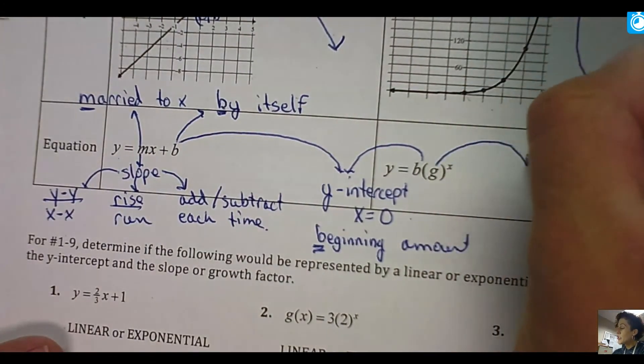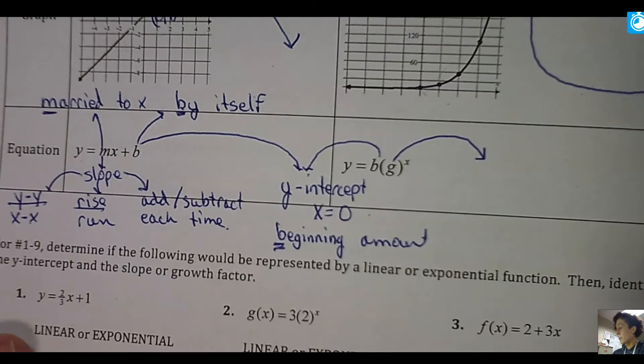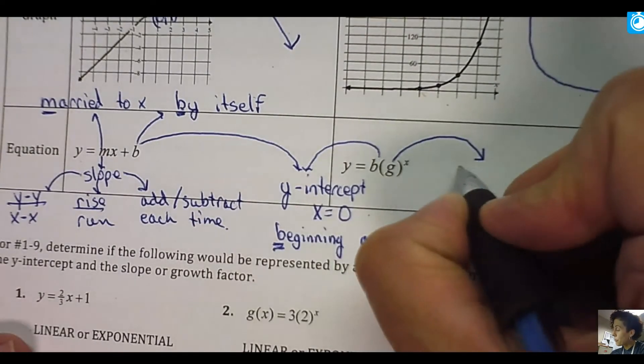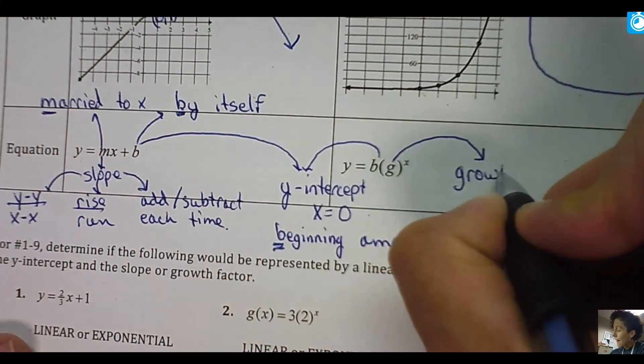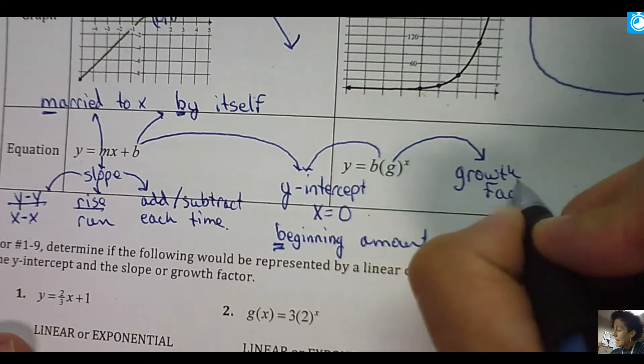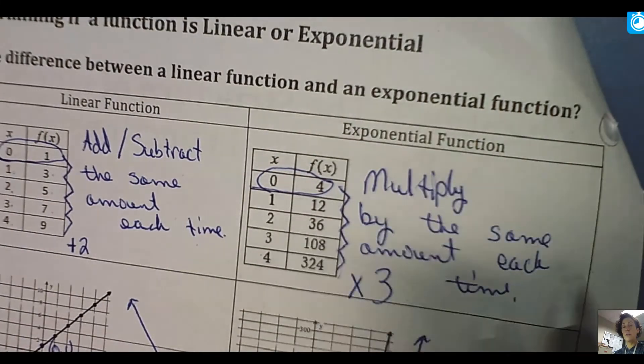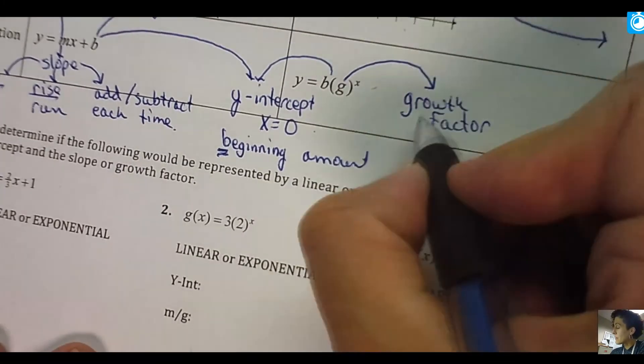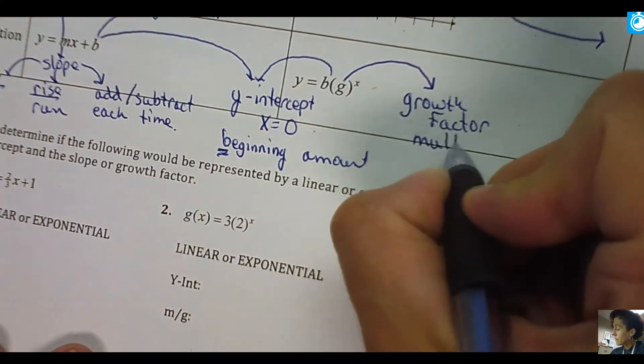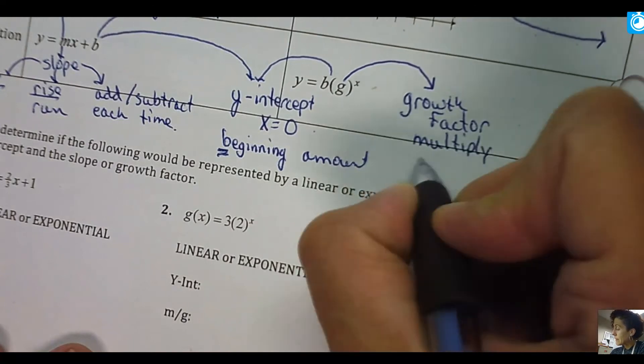The G. In G, there's two words that start with G in this chapter. There's growth factor and growth rate. And this is the growth factor. And you're going to know it's the growth factor because you're going to see it's this, what we wrote up here. It's what you multiply by each time. So it's that multiply each time.